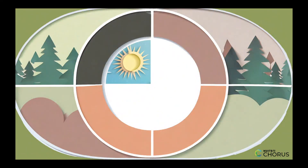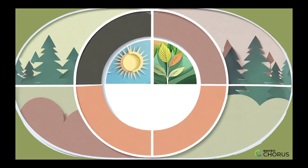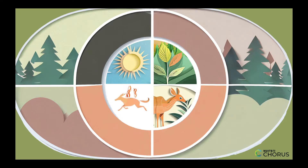Plants use the energy from the sun to make food, and then animals eat the plants to get the energy. When the animals use the energy, they release heat energy into the environment, which eventually dissipates into space. This is why energy flows through an ecosystem and cannot be recycled like matter.